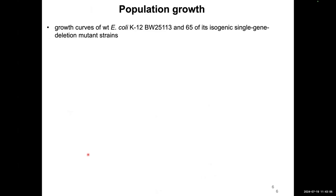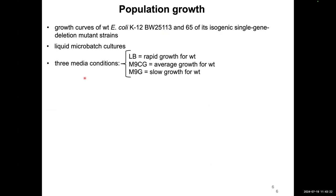We took a standard approach and looked at liquid micro-batch cultures of 65 of these mutants, using the E. coli K12 BW25113 strain, across three different media conditions. LB (luria broth) is a very nutritious media where wild type grows very efficiently. M9CG is M9 minimal media plus casamino acids plus glucose, where wild type has average growth. M9G is M9 minimal media plus glucose only, where wild type grows pretty slowly.